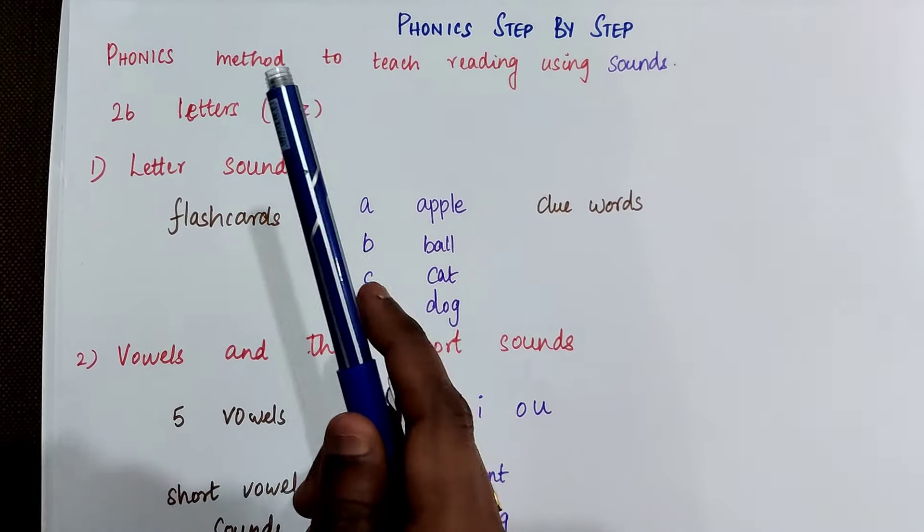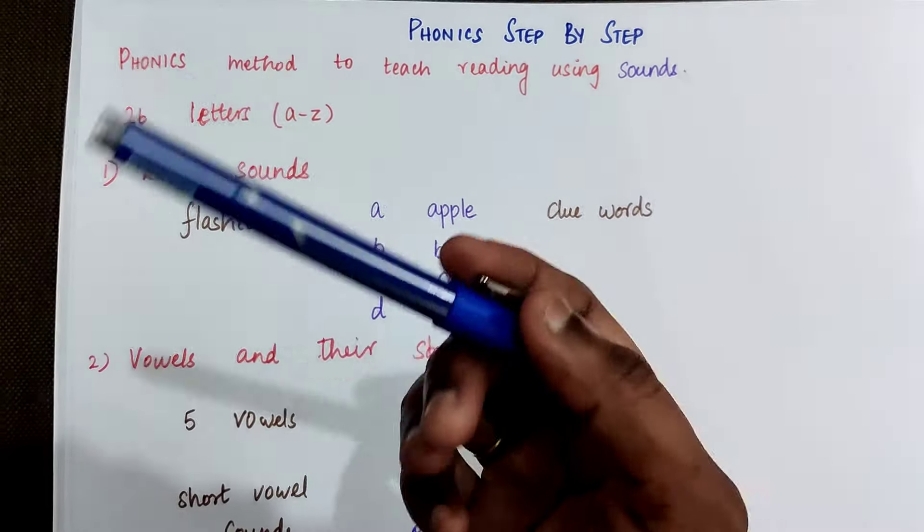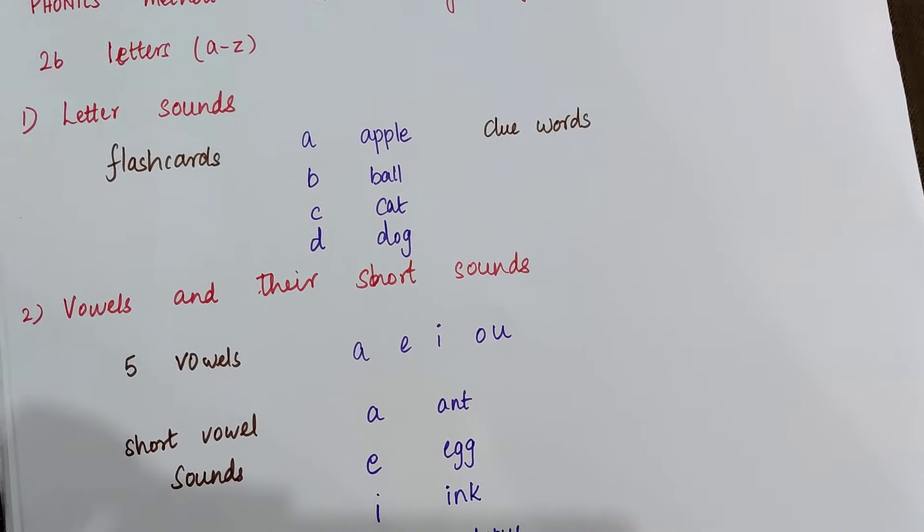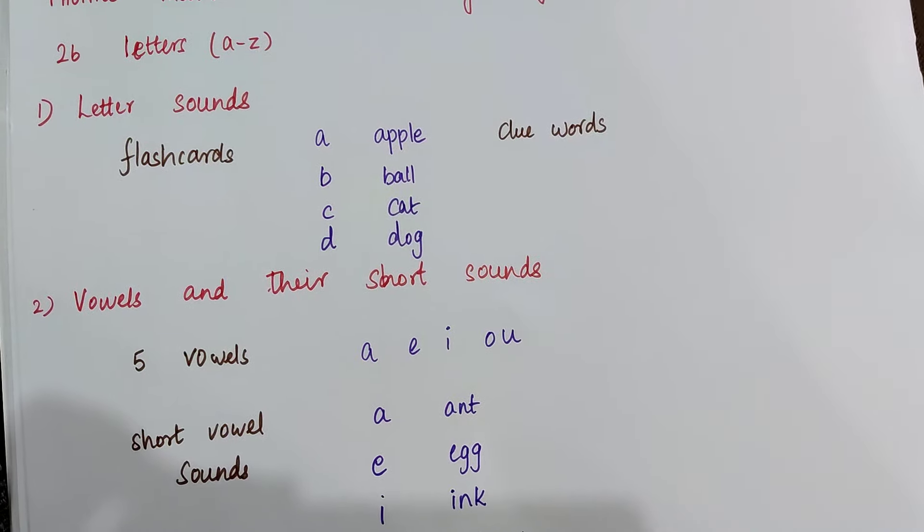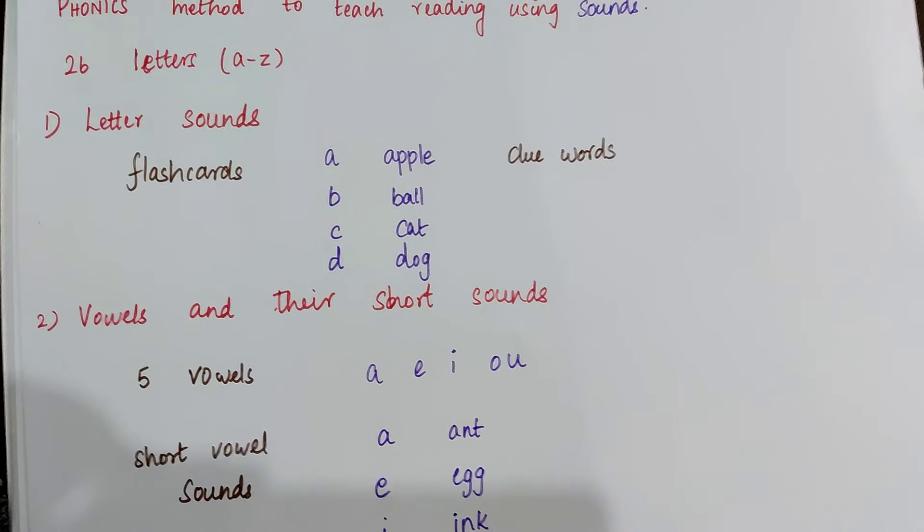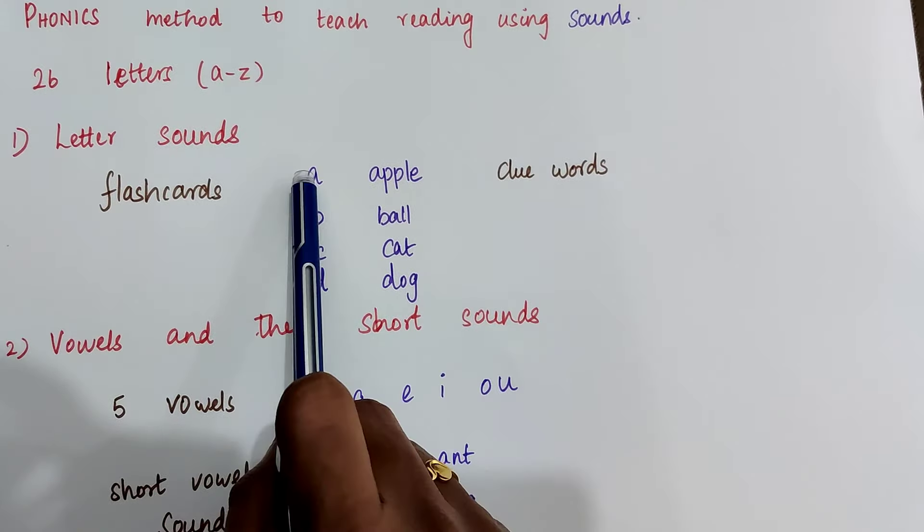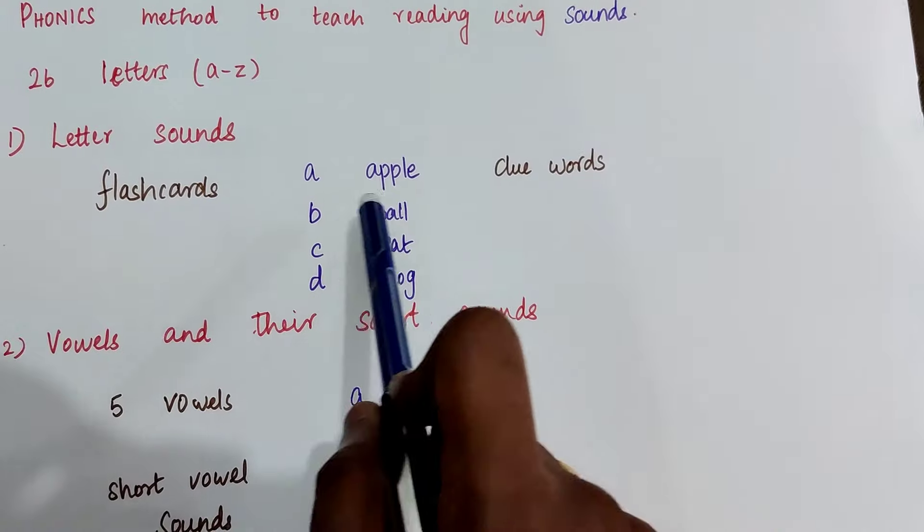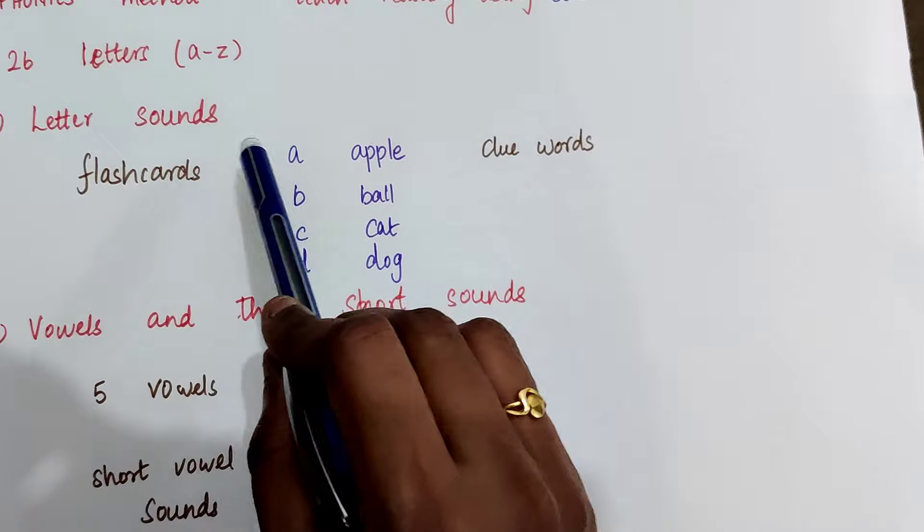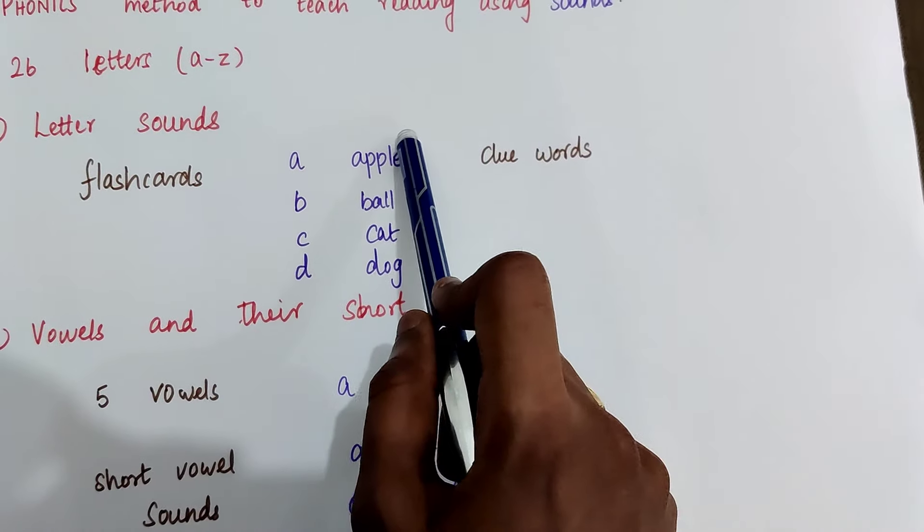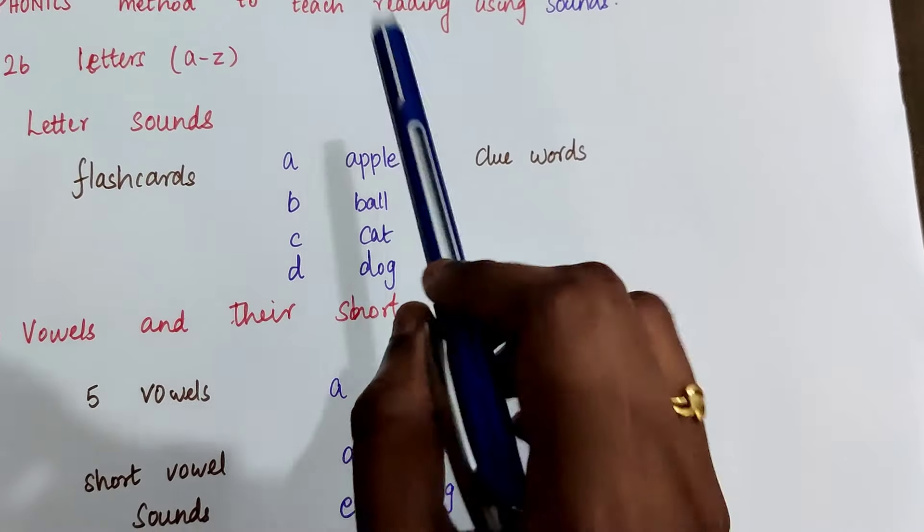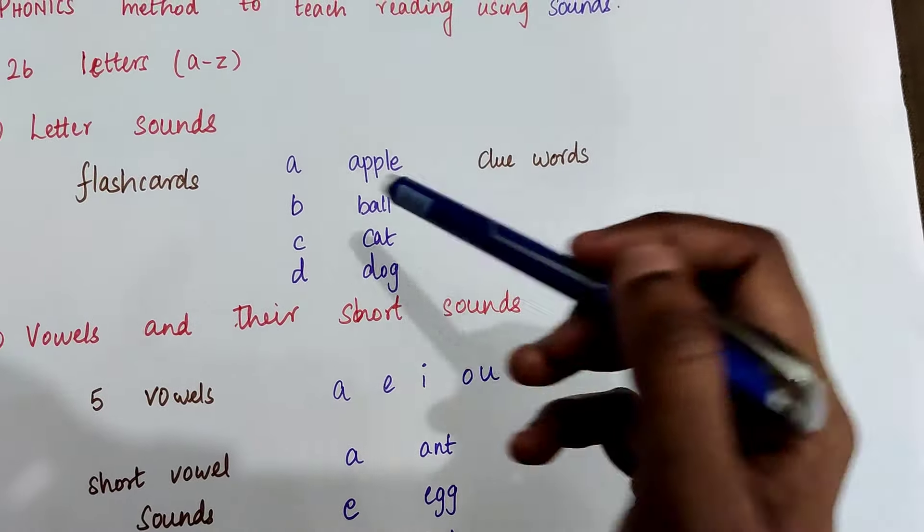Once the child is able to recognize the letters with confidence, we can move on to the first step of phonics, which is teaching them letter sounds. We can teach the letter sounds using flashcards. I have already done a detailed video on this topic. Please check the description box for its link. Let's see: a-apple, b-ball, c-cat, d-dog. So we need to teach the letter sounds with the common word that the child already knows. This helps in remembering the sounds better.